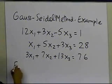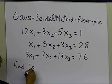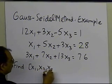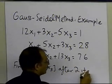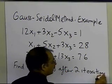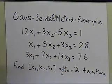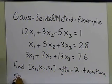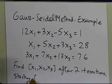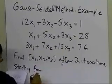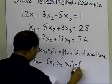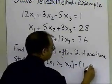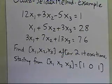We are asked to find x1, x2, x3 after two iterations — just to keep it simple. In real life you will conduct more iterations to achieve convergence. We start from an initial guess of x1, x2, x3 equal to 1, 0, 1. That's the initial guess which is given to us.